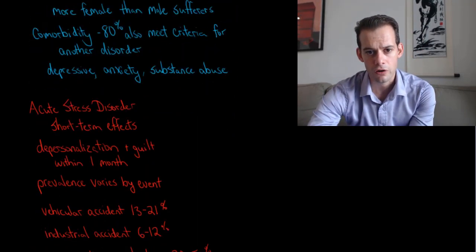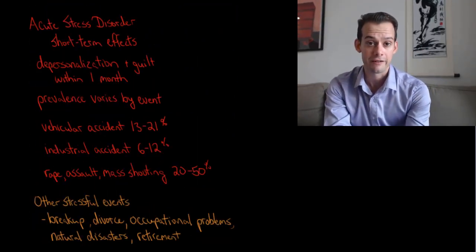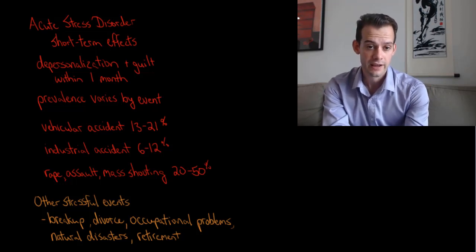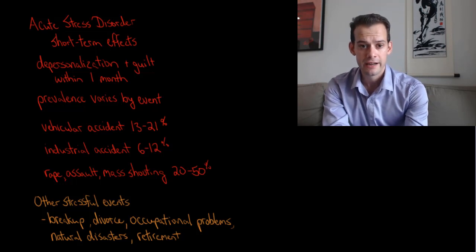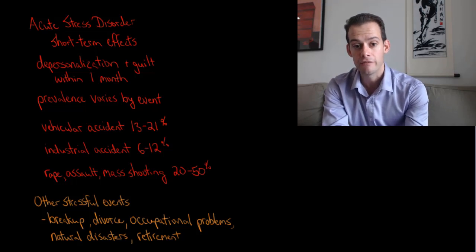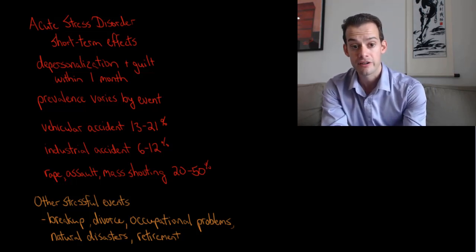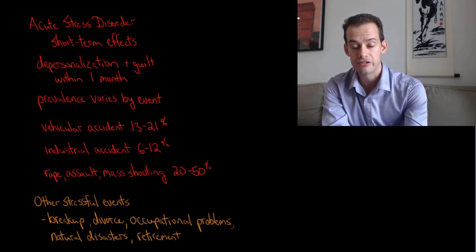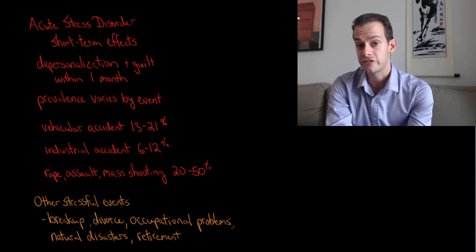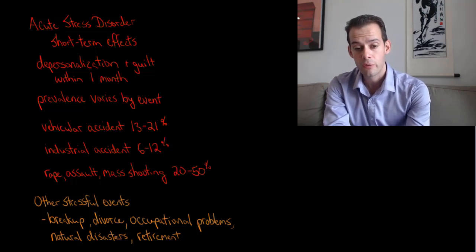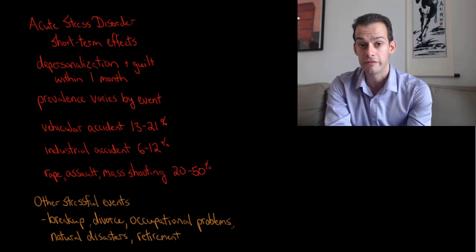In PTSD we're mostly thinking about long-term effects of exposure to a traumatic event, but we also have shorter-term effects. This brings us to acute stress disorder, which is more focused on the short-term effects of a traumatic event, focusing on symptoms of depersonalization and guilt occurring within a month of the event. Prevalence varies by event: about 13 to 21% following serious vehicular accidents, 6 to 12% for industrial accidents, and about 20 to 50% for rape, assault, or mass shootings meet the criteria for acute stress disorder.